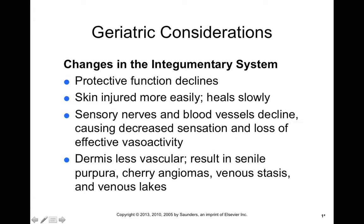Other changes in the integumentary system: generally, protective function declines as we get older — skin becomes more easily injured and also heals more slowly. Something that might be just a scratch on a younger individual could actually be a pretty deep wound in an elderly person. Sensory nerves and blood vessels also decline. Because of this lack of sensation, they aren't able to control blood flow or feel their skin as well, so they're more prone to injury associated with repetitive activities or pressure.